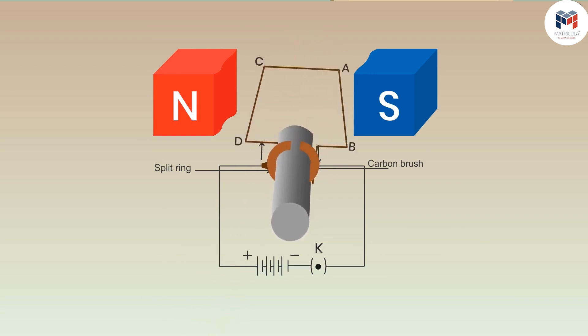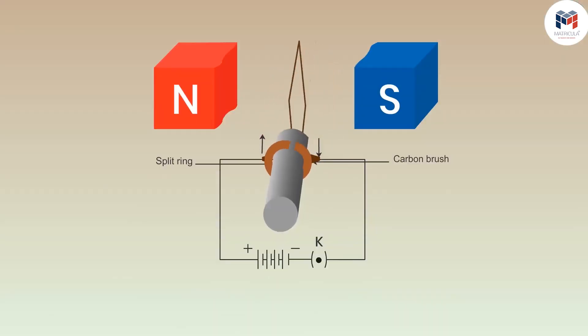Also the force acted on the arms AB and CD will help the motor to keep rotating in one direction by changing its direction. Let's see it is for the second time.